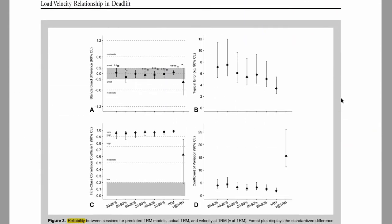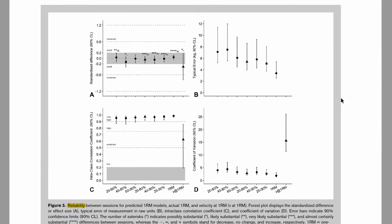Looking firstly at the reliability results: on the x-axis we always have the prediction models, the 1RM, and velocity at 1RM. Looking at the standardized differences we see that there are actually no differences — they're all trivial.